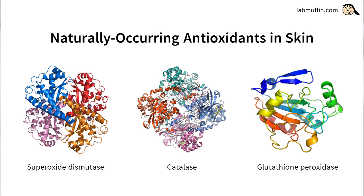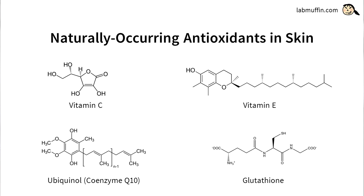Your body naturally contains antioxidants that can soak up these free radicals. There are antioxidant enzymes like superoxide dismutase, catalase and glutathione peroxidase. There are also smaller antioxidants like vitamin C and E, coenzyme Q10 (also known as ubiquinol) and glutathione. However, these natural antioxidant systems that our bodies have evolved over time can get overwhelmed if there are just way too many free radicals. That's why a lot of people try to supplement their bodies with extra antioxidants from so-called superfoods, supplements and skincare.